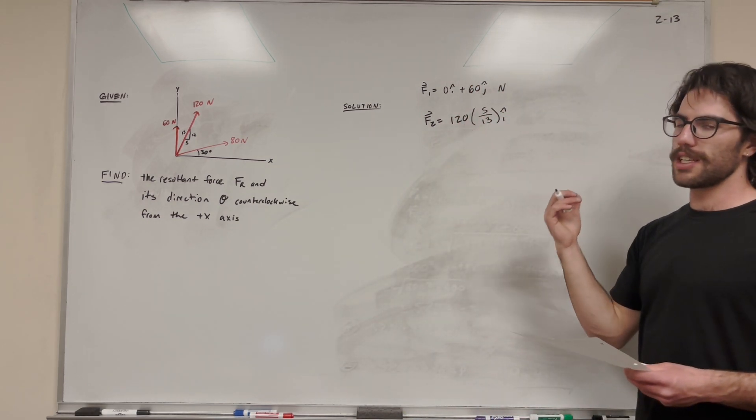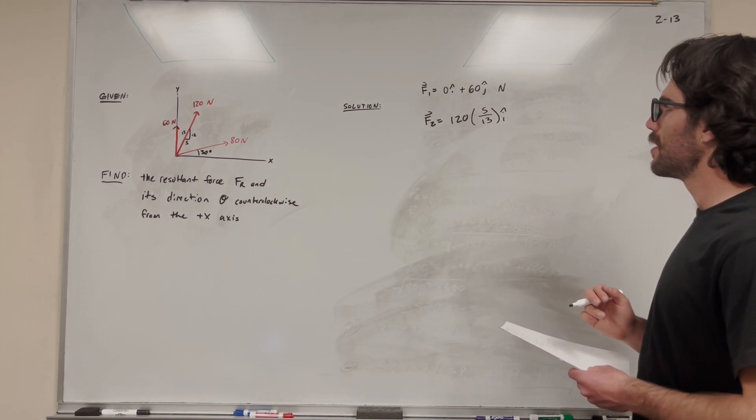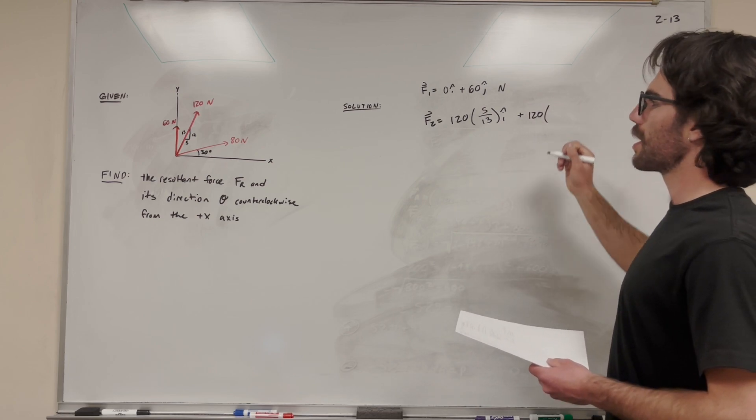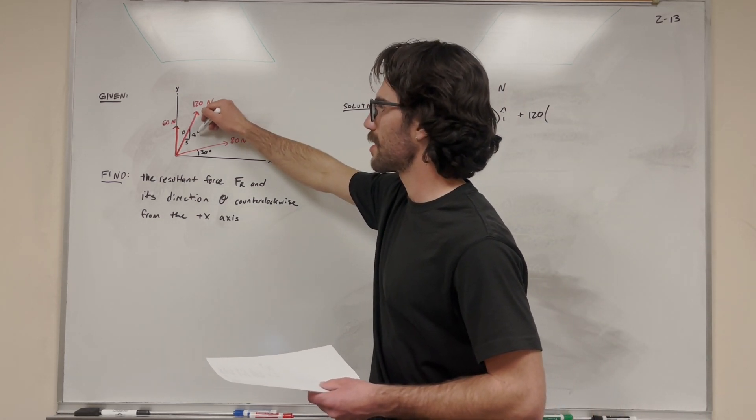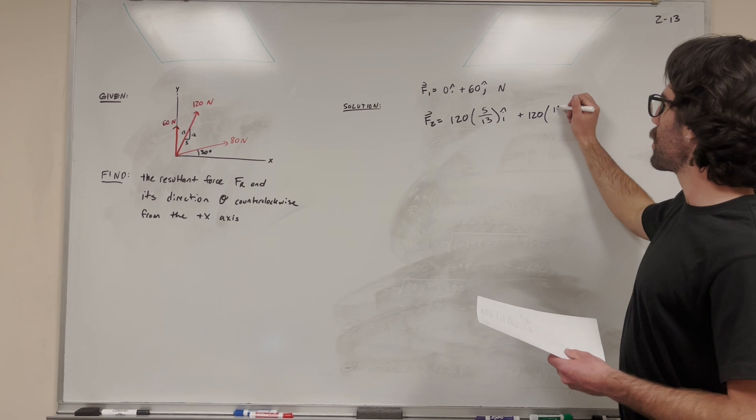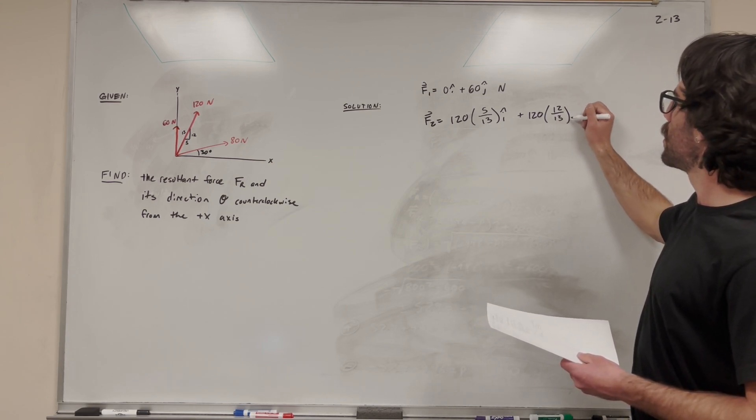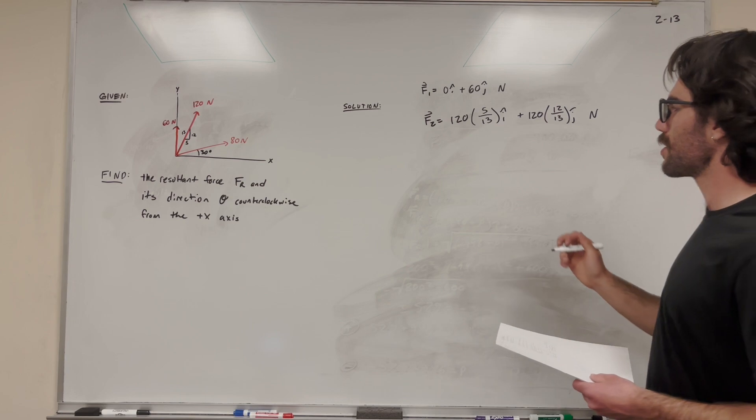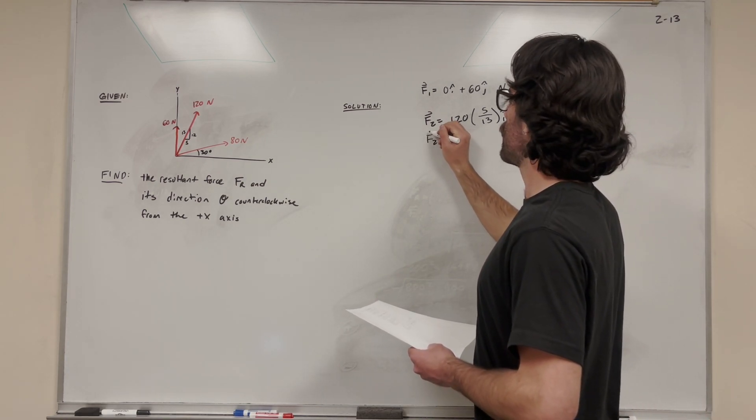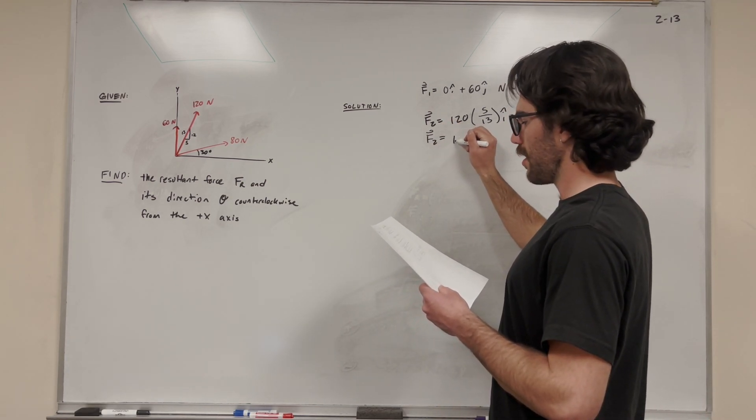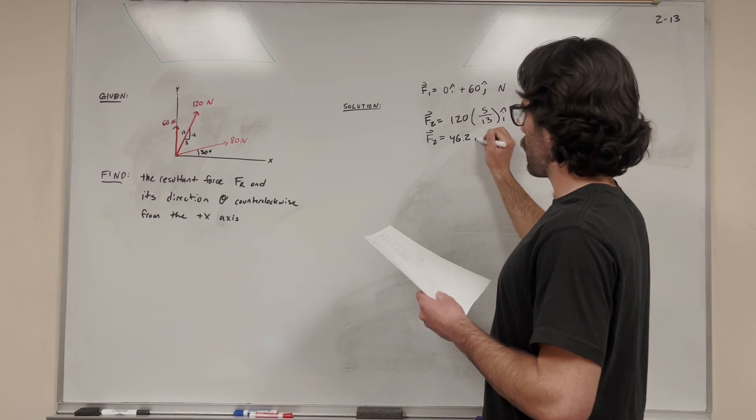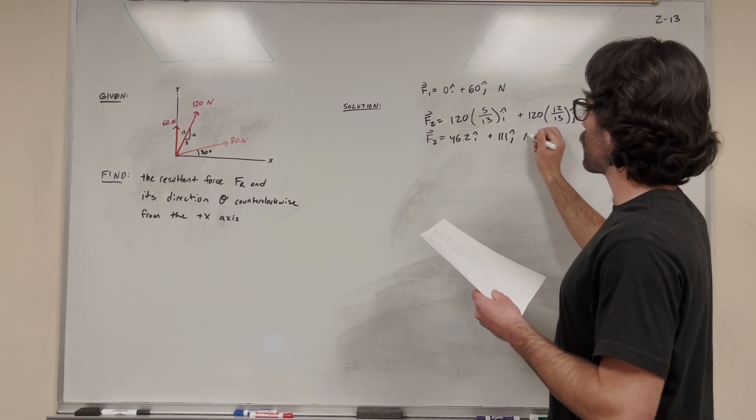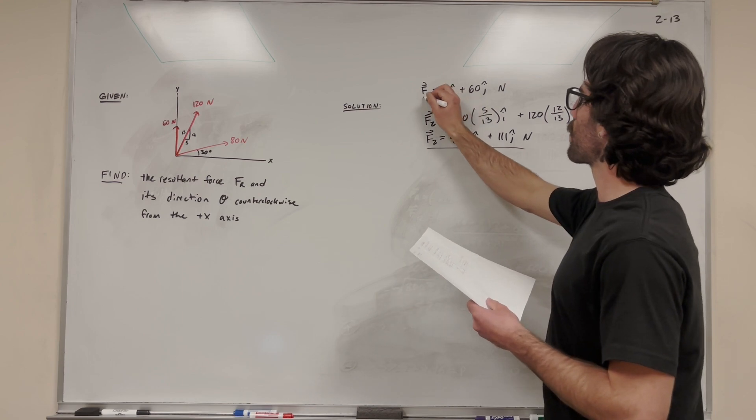We'll make it positive because it's in quadrant 1. So then the j component similarly is going to be 120, but instead we're looking at the y component, which has the 12 attached to it. So this ratio is 12 over 13, and we're going to multiply it by j newtons. Alright, so let's do the math on this. Force 2, plug this into your calculator, you get 46.2i plus 111j newtons. So that's the one we're looking at there.